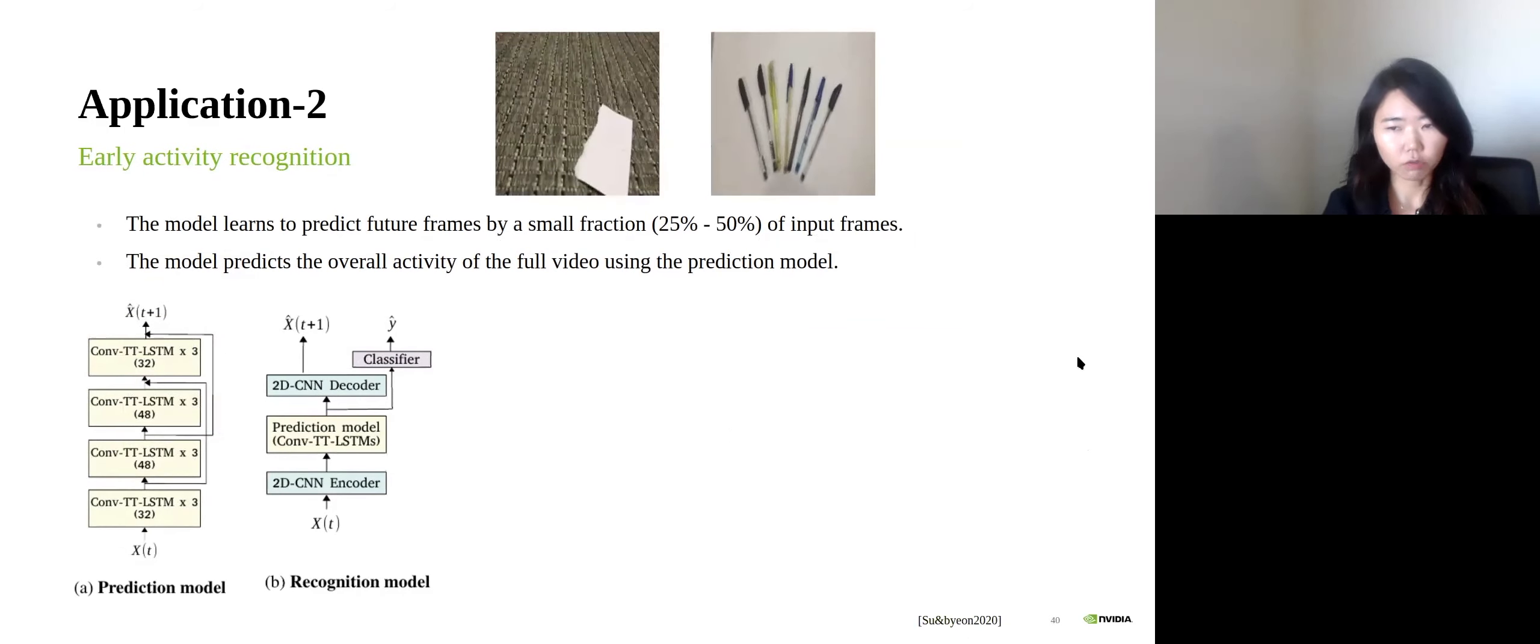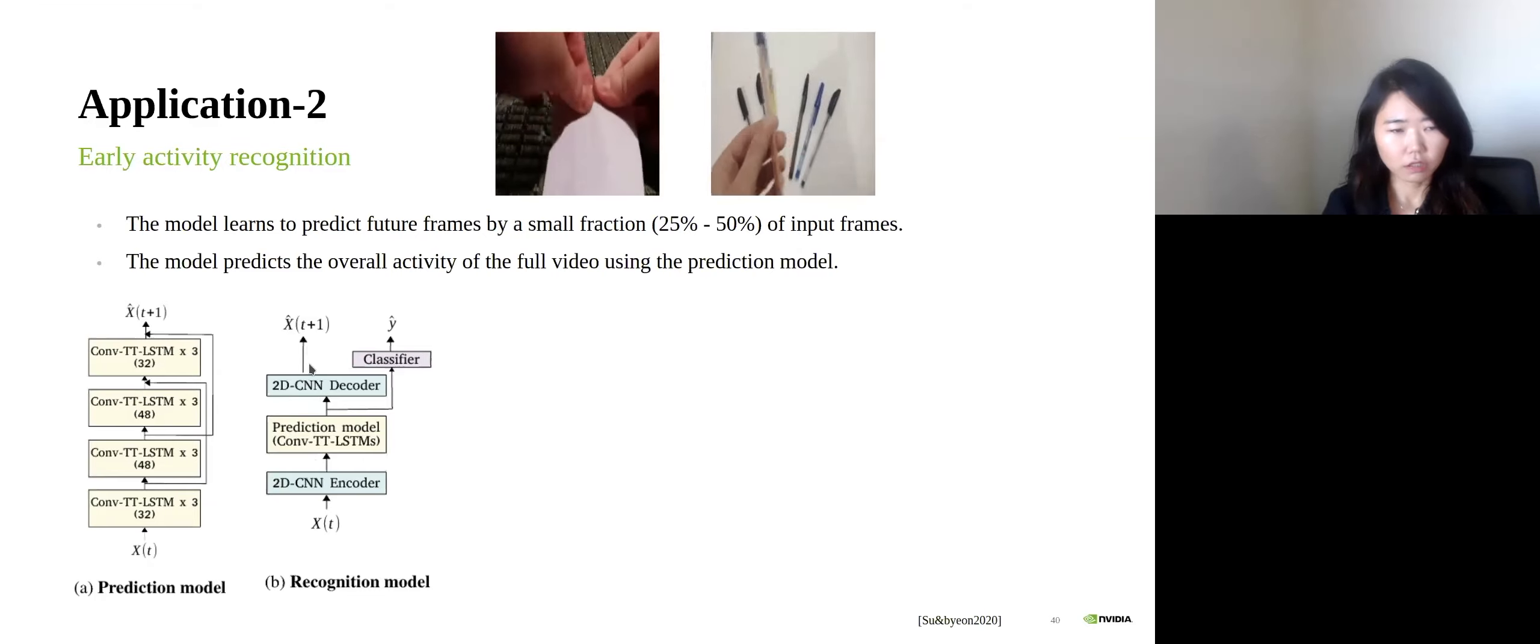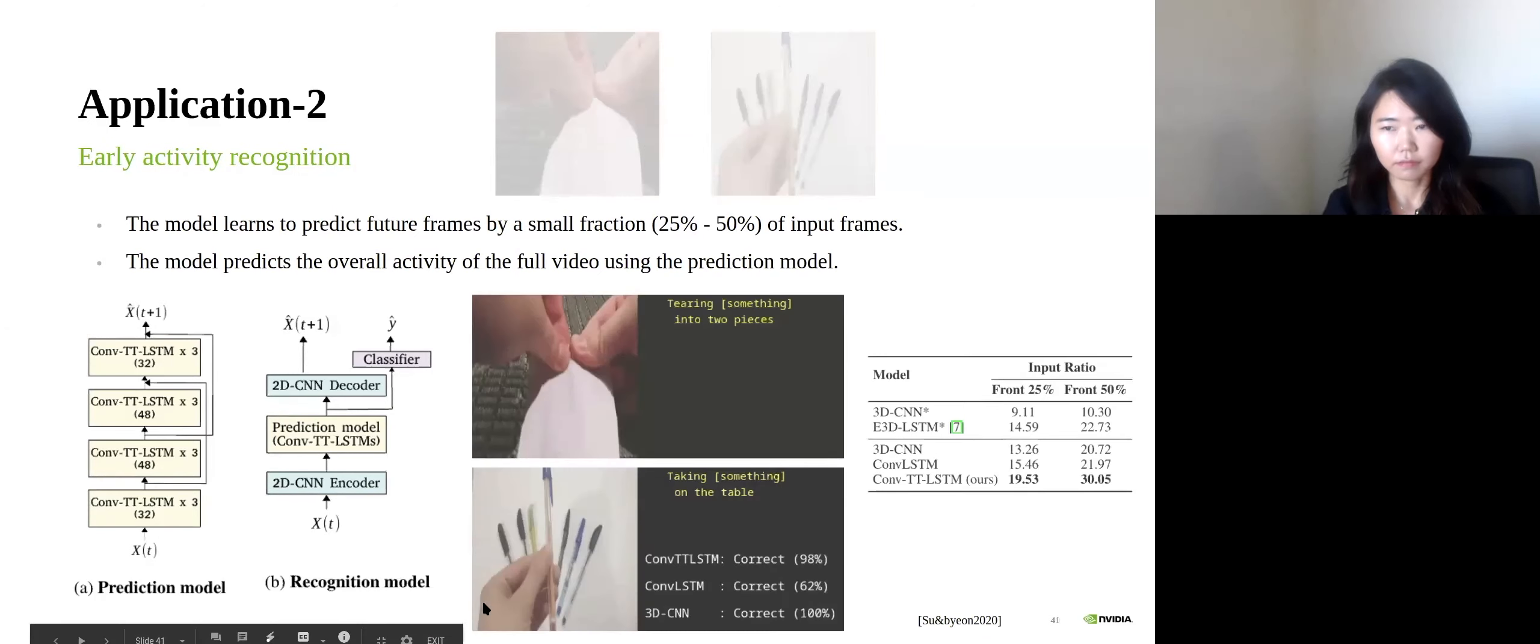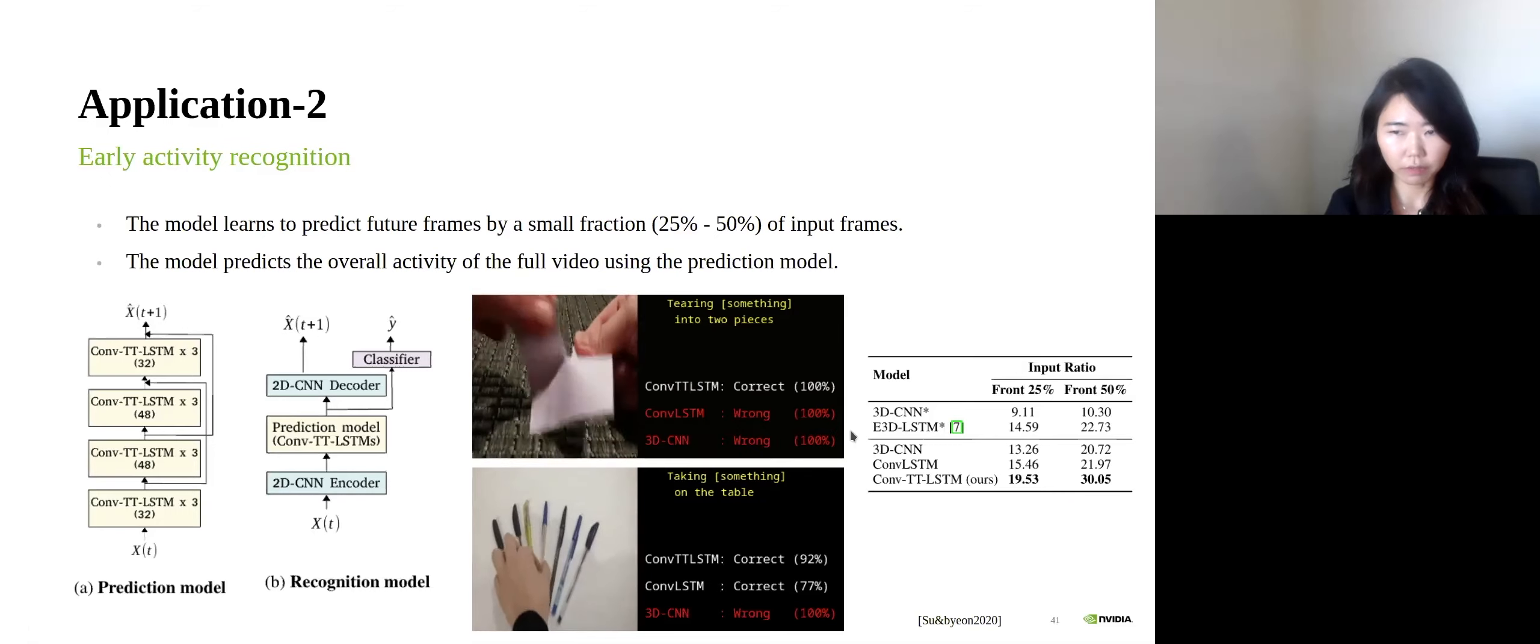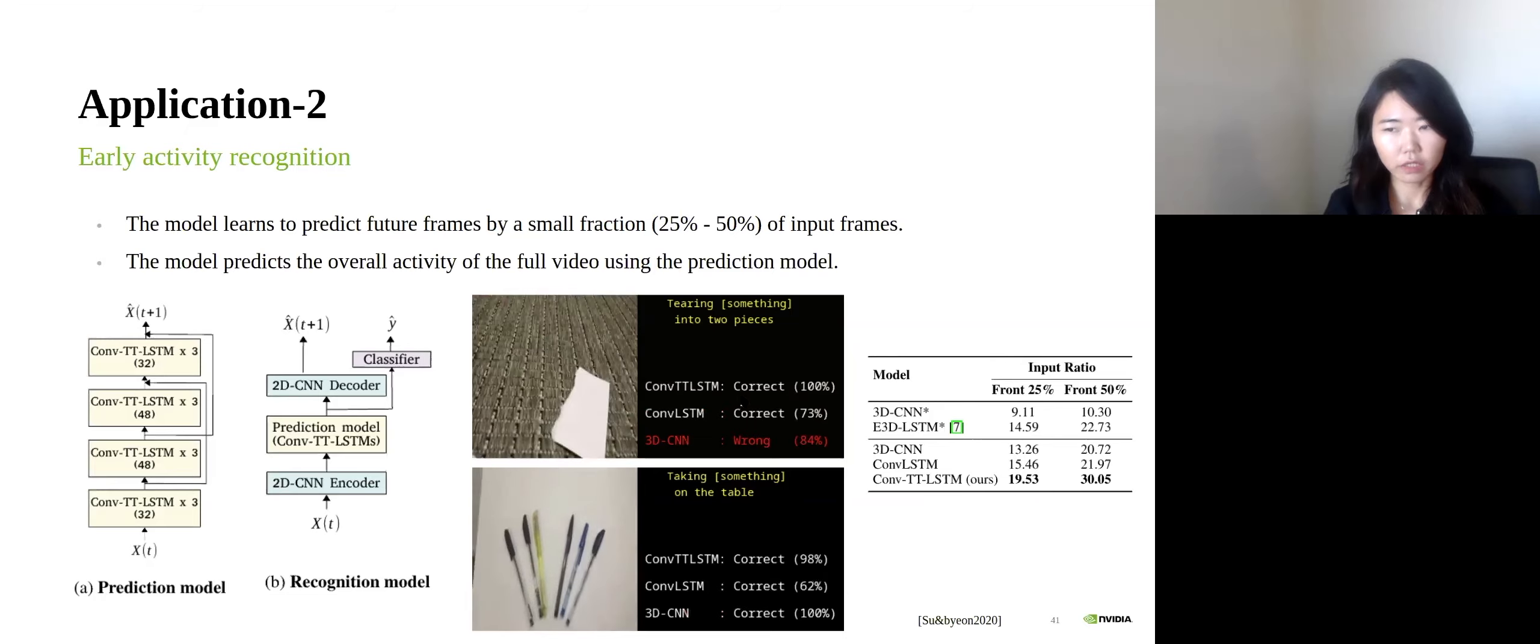The next application is early activity recognition. For this task, each video contains one activity. The task is to recognize activity without seeing the entire videos, using our video prediction model. In our experiment, we use the 25% or 50% of the video frames. This is the main architecture of this task. It's an encoder-decoder structure with the prediction model in the middle. Then it outputs the next frame and also the class label. These videos show the recognition result. The time frame of the video indicates the amount of frames the model has seen. Our model can already correctly recognize activity at the beginning of the videos with a very high confidence.